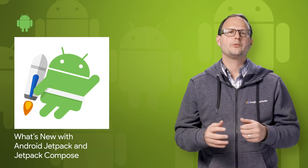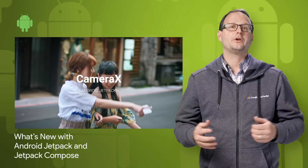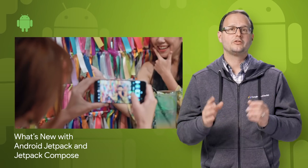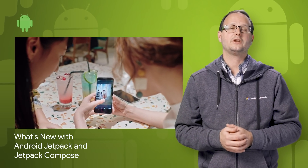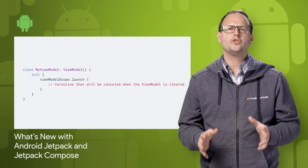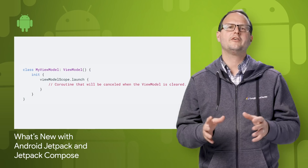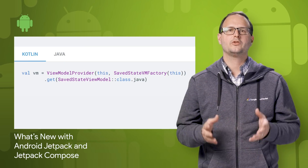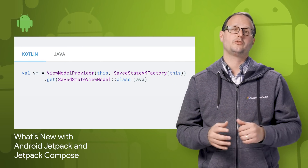We're excited to share 11 Jetpack libraries that can be used in development today. CameraX, now in alpha, enables you to create great camera-driven experiences in your app without worrying about the underlying device behavior. It gives you access to the same functionality as the native camera app, including features like portrait, night, and HDR where supported. Also in alpha, there's LiveData and lifecycles with coroutines, ViewModel with safe state, and lots more.